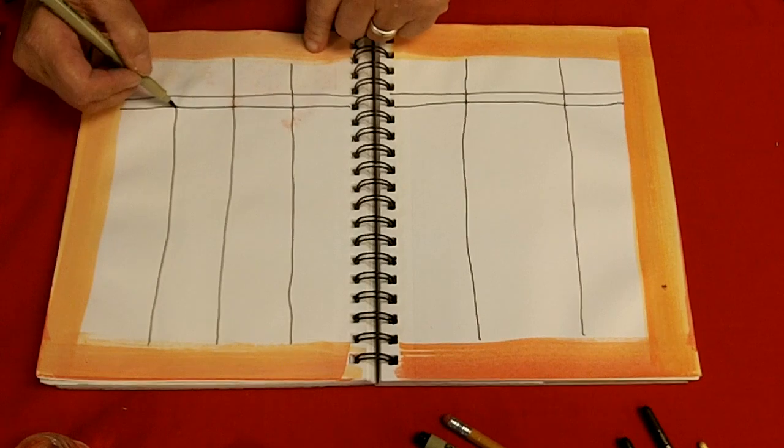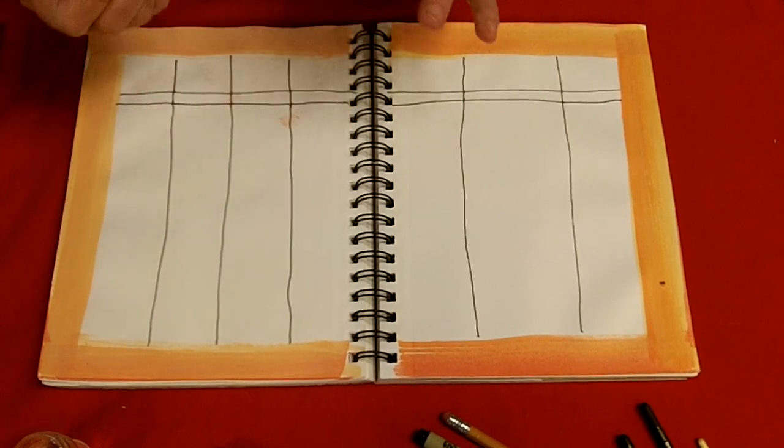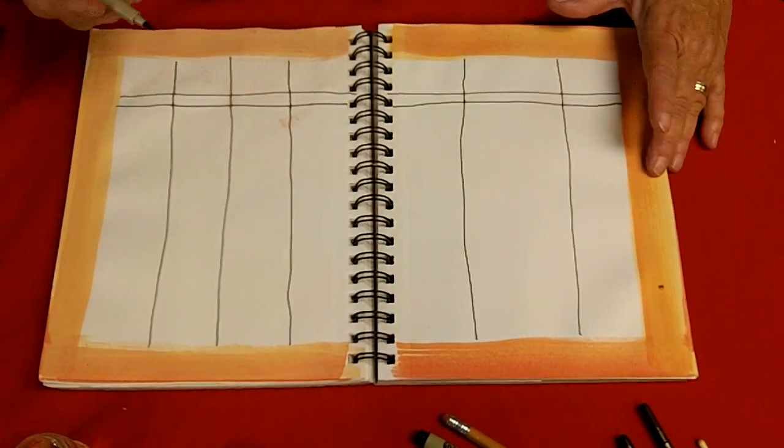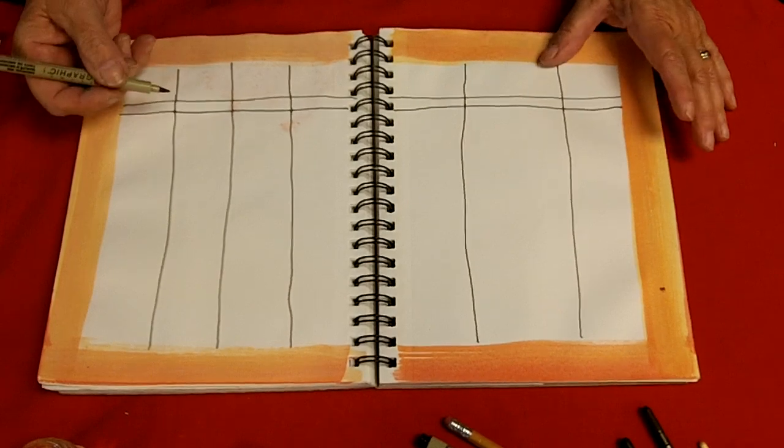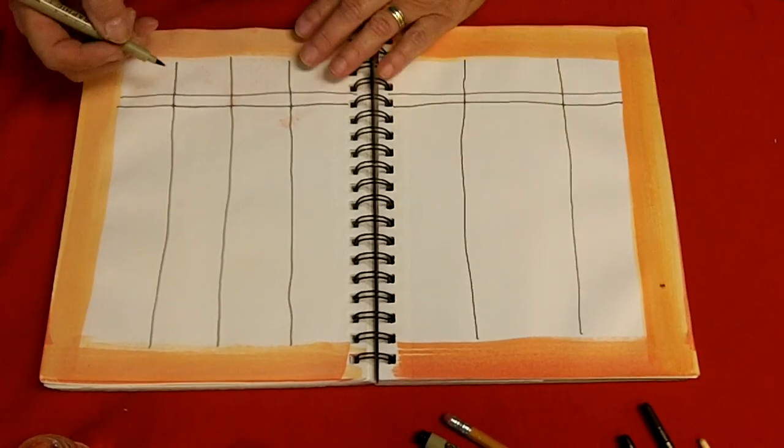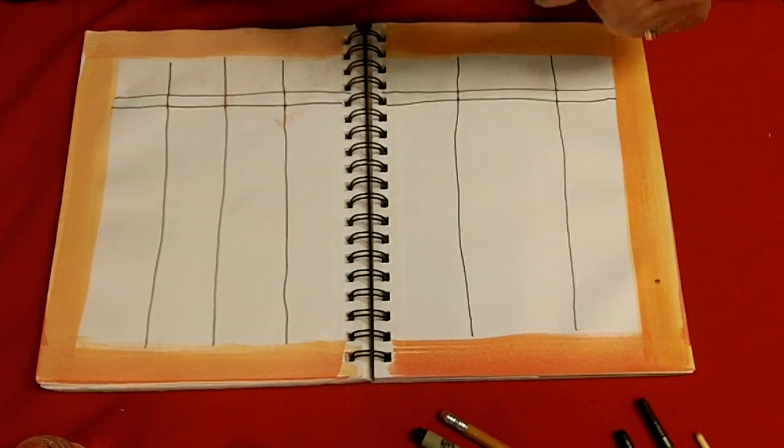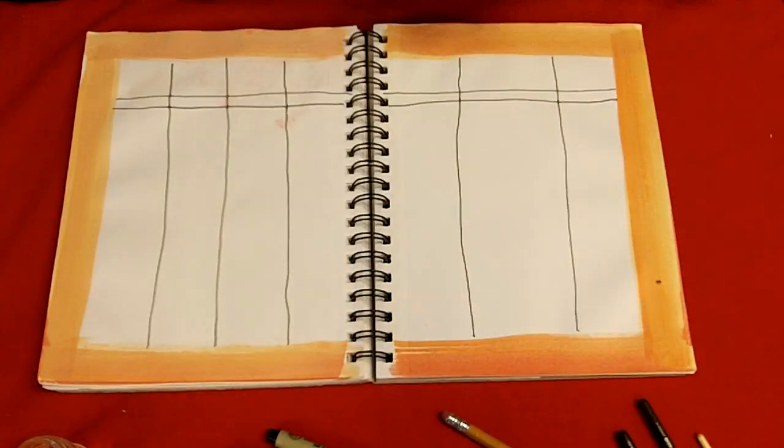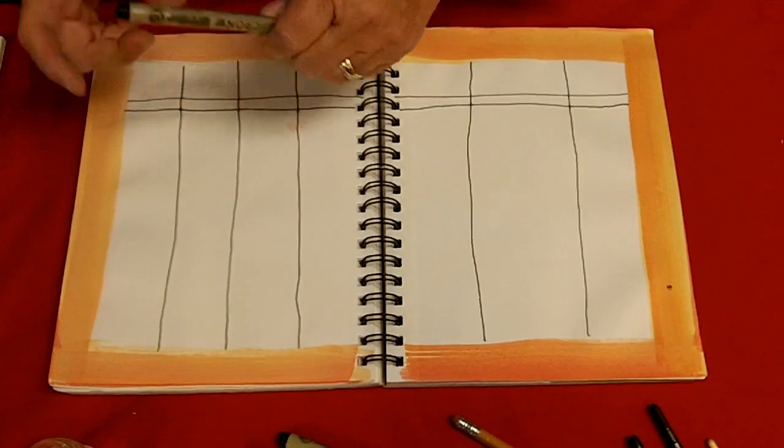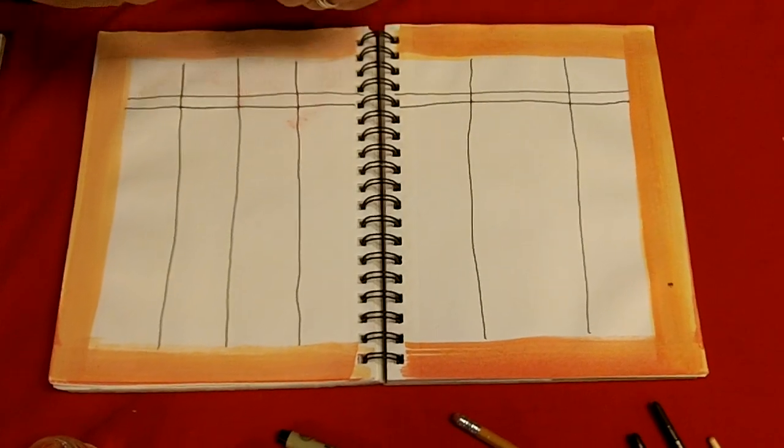So I'm using a micron black pen and this is wonderful because it is waterproof and it does not fade. Some of your markers will fade to brown with age but not this one. So now I'm just going to switch over to a little bit smaller pen. This is the first one was a graphic one. This is an 02.